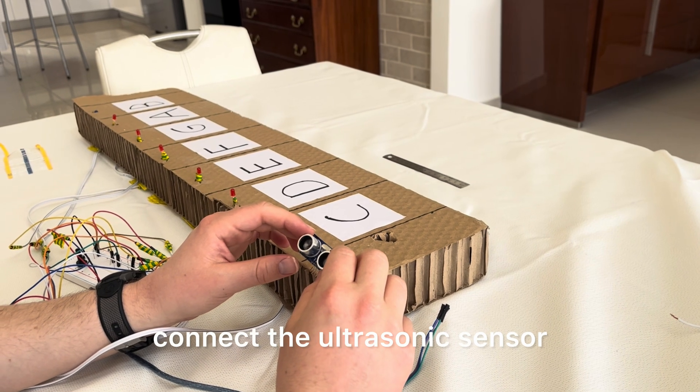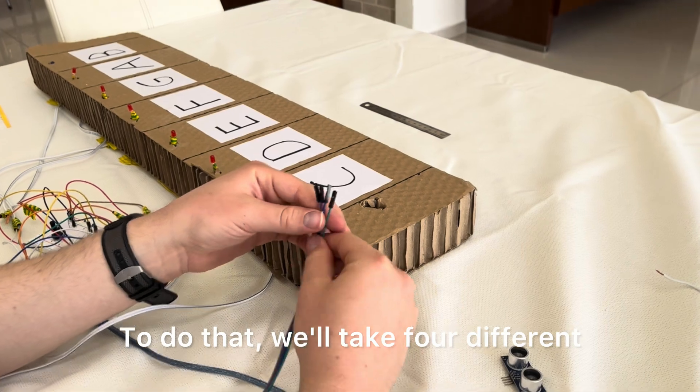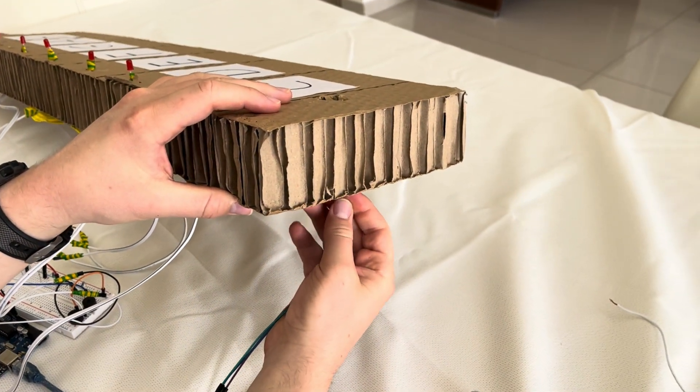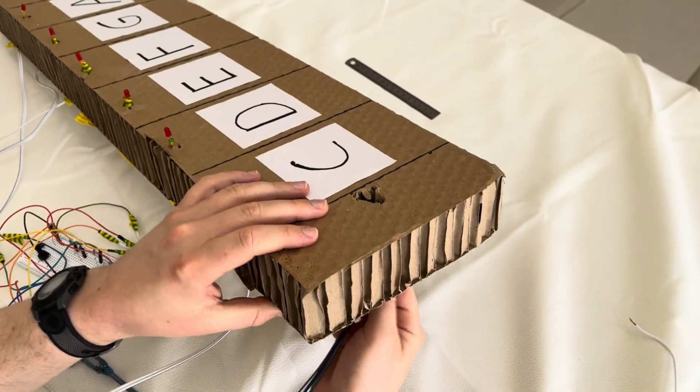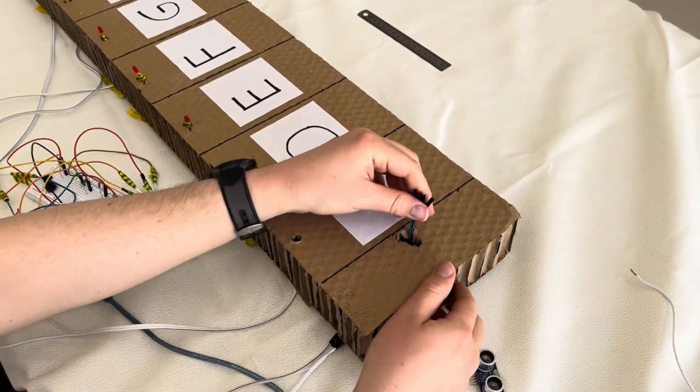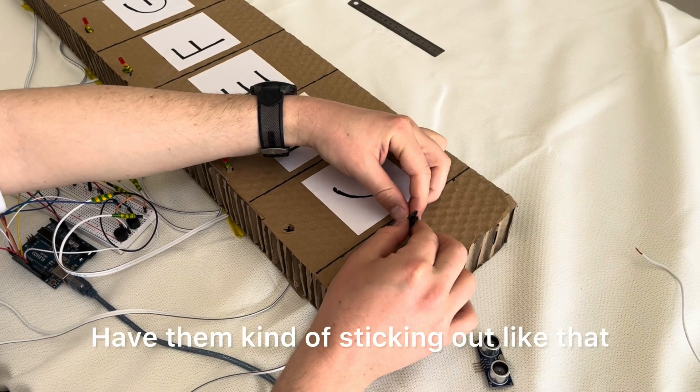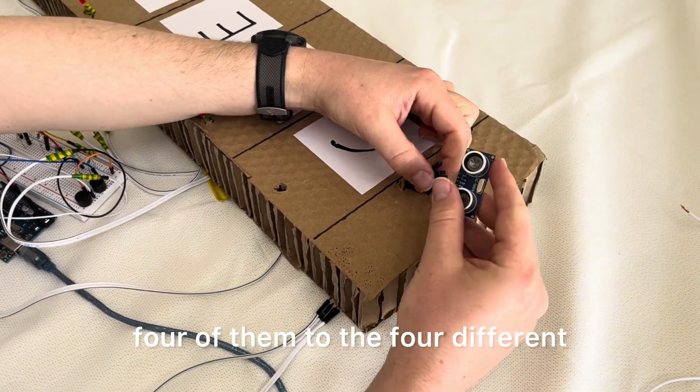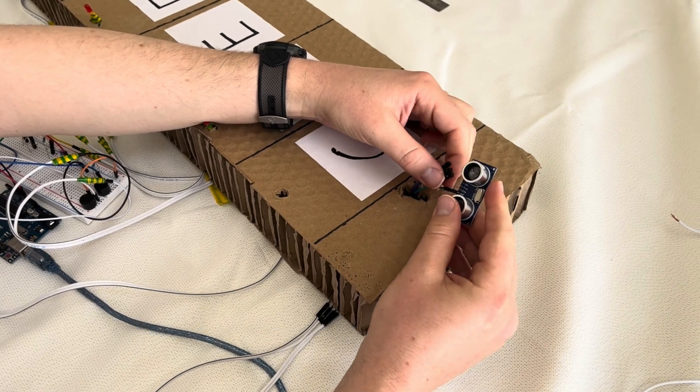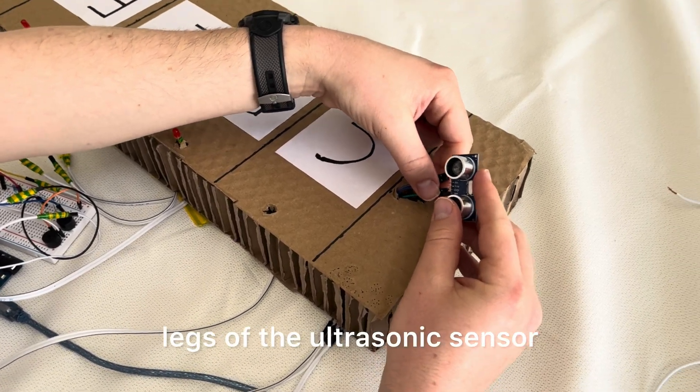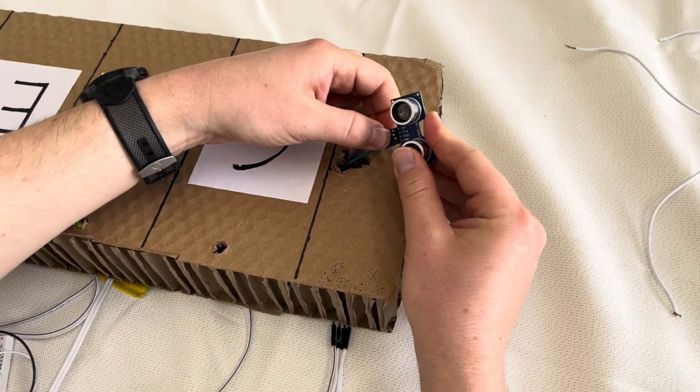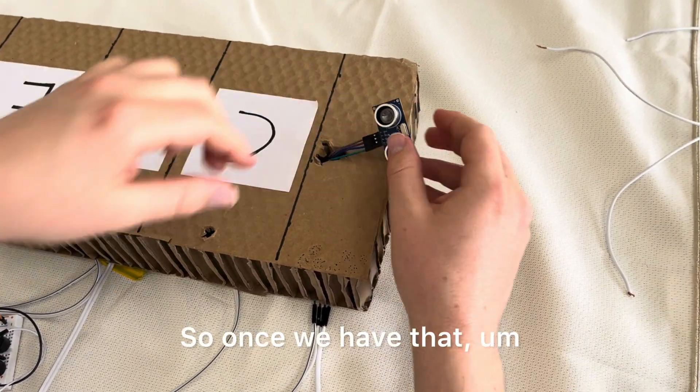Connect the ultrasonic sensor. To do that, we'll take four different jump wires, put them in from the bottom to the top, have them kind of sticking out like that. Then connect four of them to the four different legs of the ultrasonic sensor.